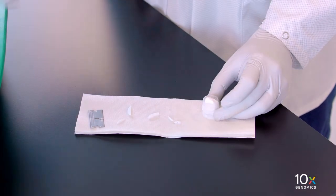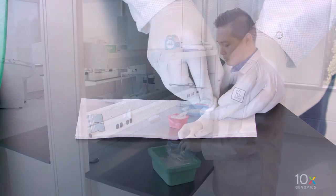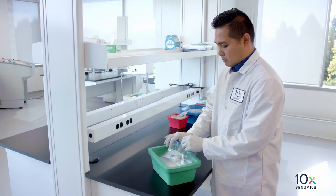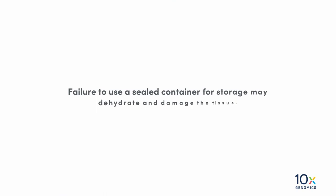Then place the OCT embedded tissue block into a pre-cooled Wheaton Cryoleat cryovial. Alternatively, a resealable bag can be used for storing the tissue block. Failure to use a sealed container for storage may dehydrate and damage the tissue.